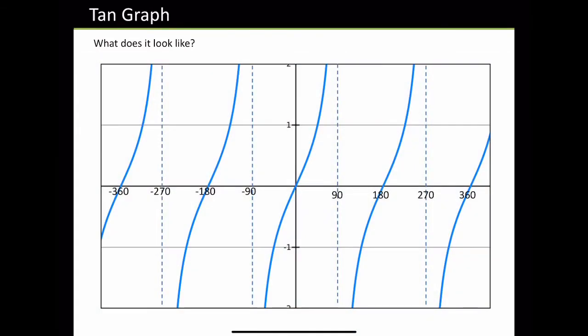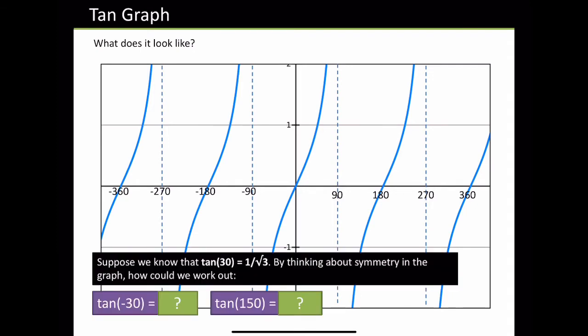The tan graph — this is the one that you actually saw yesterday, it looks the most confusing. So first of all, what does it look like? Well, it looks like this. Suppose that we know that tan 30 is 1 over root 3. Tan minus 30 — what would that be? Well, minus 1 over root 3. What would tan 150 be? Well, tan 150 will be minus 1 over root 3.